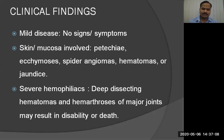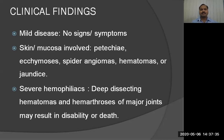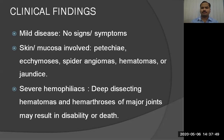Clinical findings vary by severity. In mild disease there may be no signs or symptoms. In moderate disease, the skin or mucosa may show petechiae, ecchymosis, spider angiomas, hematomas, and jaundice. In severe hemophilia, deep dissecting hematomas and hemarthrosis of major joints may be seen. A deep dissecting hematoma is a hematoma formed in soft tissues — especially muscles or fascial planes — that dissects through those planes.